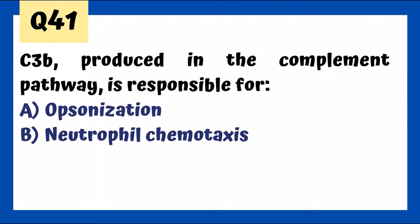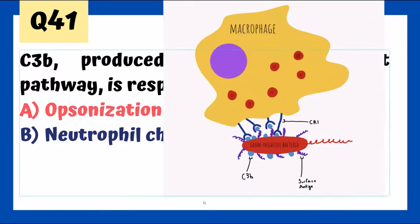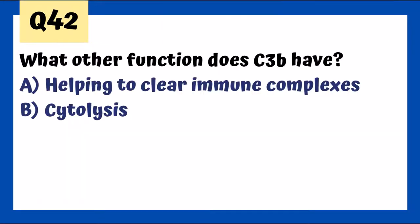C3B produced in the complement pathway is responsible for opsonization — coating bacteria to prepare them for phagocytosis by macrophages. IgG is also an opsonin. C3B also helps clear immune complexes, functioning similarly to how it works in opsonization — coating immune complexes for clearance. Patients with decreased C3B have increased risk of SLE, since widespread immune complex deposition is seen in SLE.